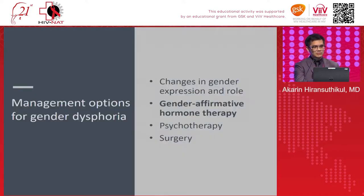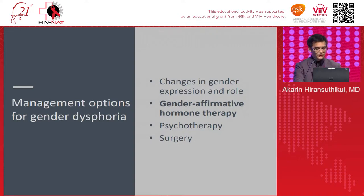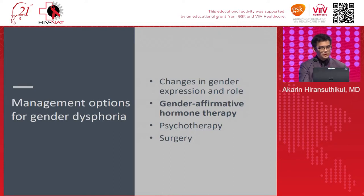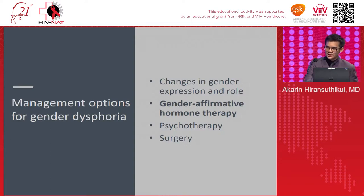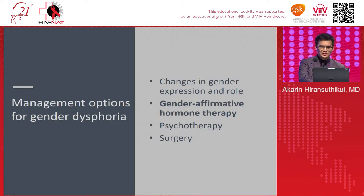There are guidelines mentioning management options for gender dysphoria. Roughly, these include: number one, changes in gender expression and role; number two, GA-HT, which we'll discuss extensively; number three, psychotherapy; and last but not least, surgery — more precisely called sex reassignment surgery, or SRS.